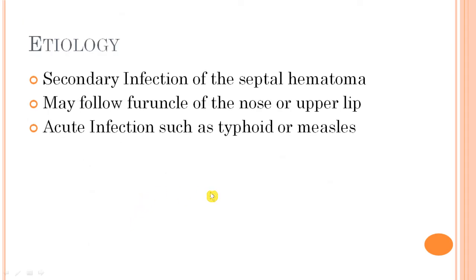Regarding causes: mainly it is due to secondary infection of the septal hematoma, as just discussed. It may also follow a furuncle of the nose or upper lip — Staphylococcus typically causes carbuncles and furuncles of the skin, nose, and upper lip, and that infection may spread into the septum. Additionally, it may develop due to acute infections such as typhoid or measles.